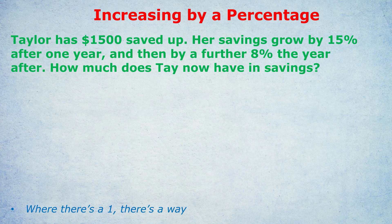Most of you would probably get this right with a calculator but you might do it the slow way — dividing 1,500 by 100, multiplying by 15 to get 15%, then adding that on to 1,500, and doing the same for 8%. I'm going to show you a very quick shortcut. Some of you might have thought to increase in one go by 23% because 15 plus 8 is 23. That's definitely wrong — it doesn't work like that.